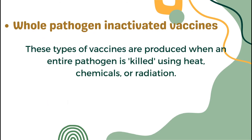Whole Pathogen Inactivated Vaccines. These types of vaccines are produced when an entire pathogen is killed using heat, chemicals, or radiation. Whole virus vaccines use a weakened, attenuated, or deactivated form of the pathogen that causes a disease to trigger a protective immunity to it.